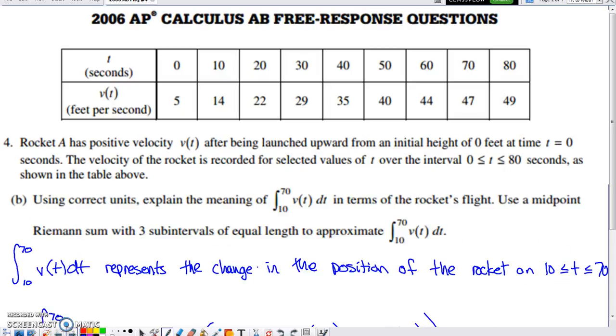Part B asks us to interpret what something represents within this situation. It asks us to use correct units and explain the meaning of this definite integral in terms of the rocket's flight, and to use a midpoint Riemann sum with three subintervals of equal length to approximate the value. When you integrate a rate of change and velocity is the rate of change of position, the result for that definite integral calculation is going to be how much change happened for the function across the limits. So when I integrate that rate of change, I determine how much the position of the rocket has changed on the interval from 10 to 70.